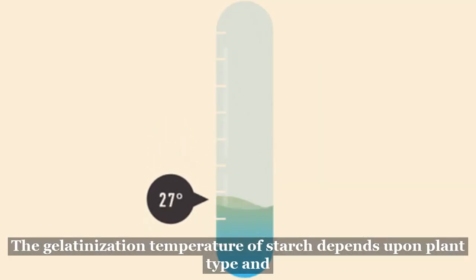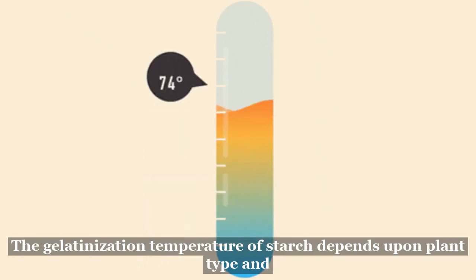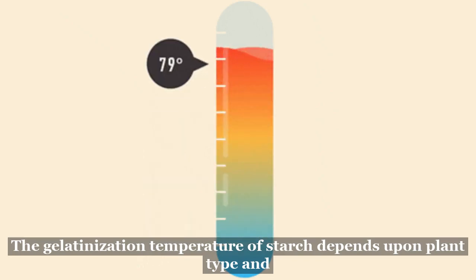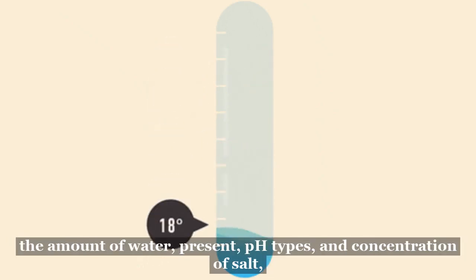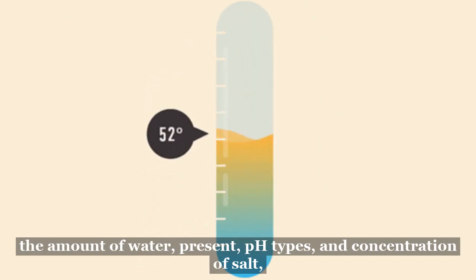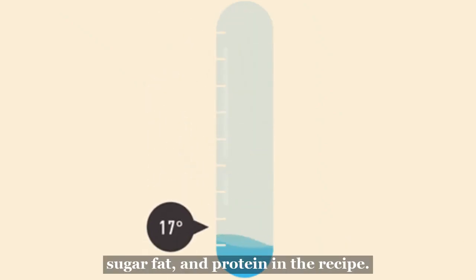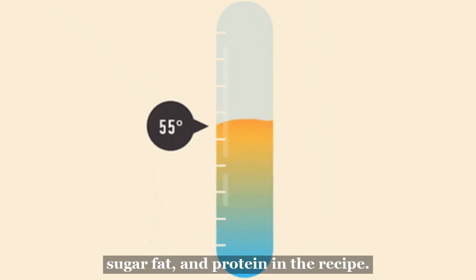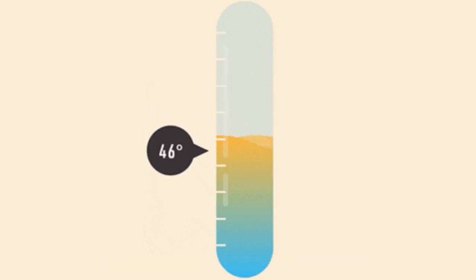The gelatinization temperature of starch depends upon the plant type and the amount of water present, pH, types and concentration of salt, sugar, fat, and protein in the recipe.